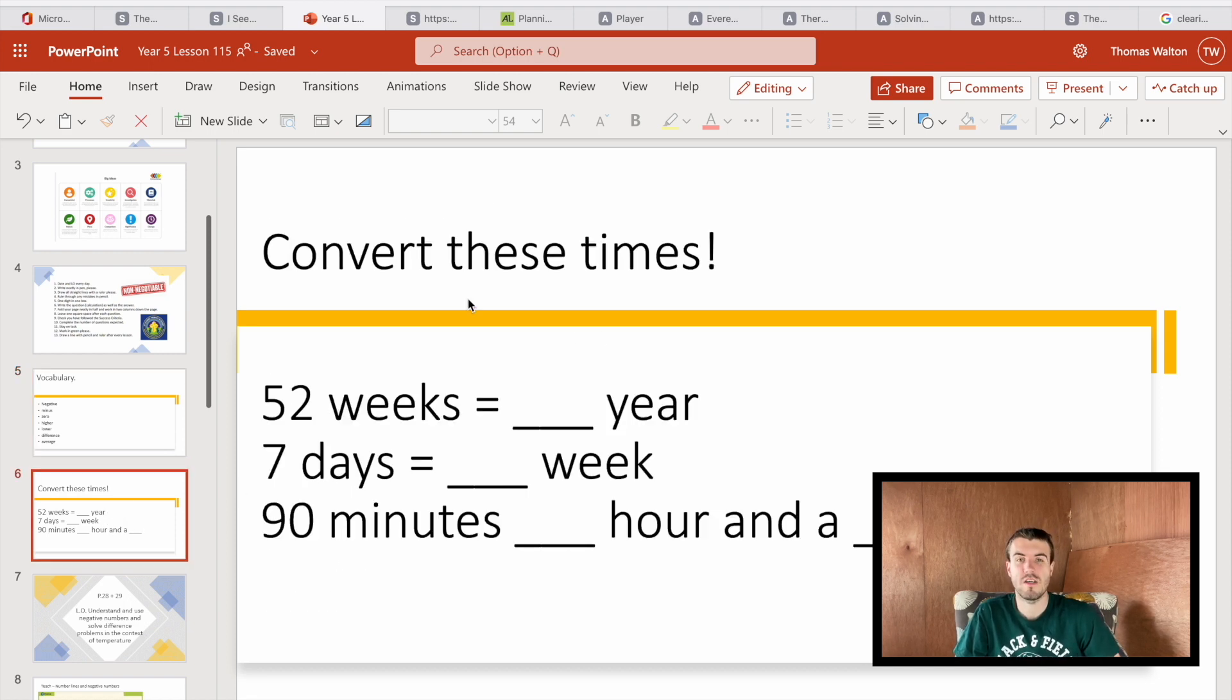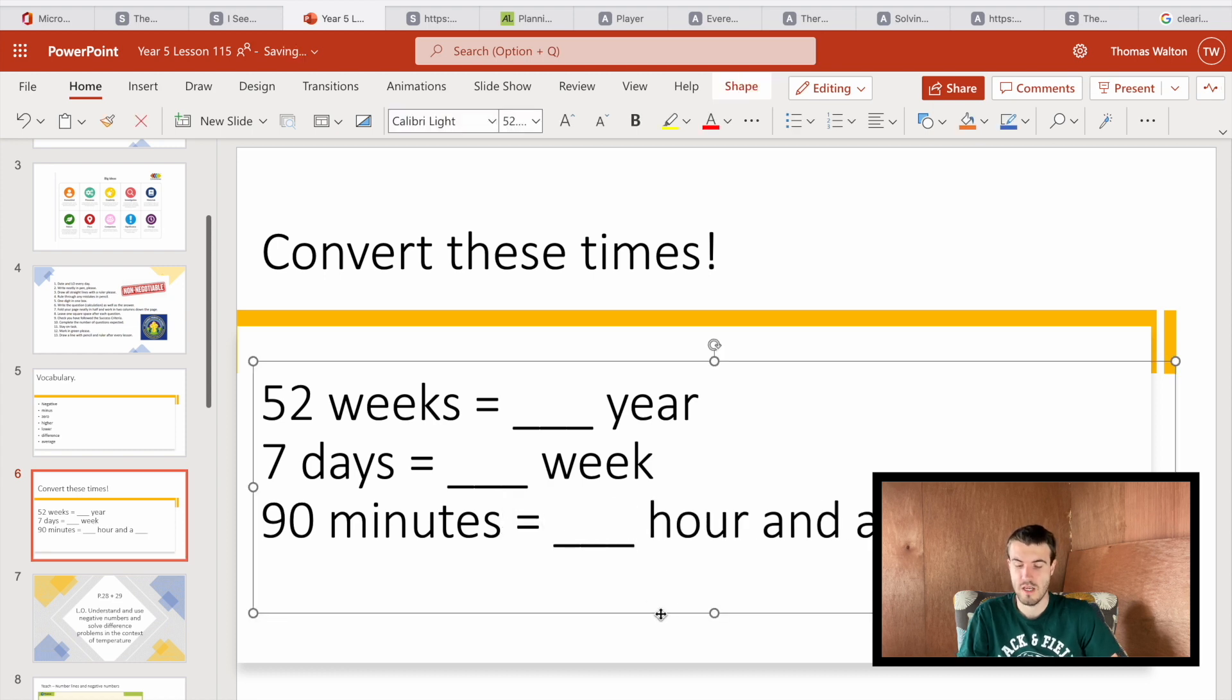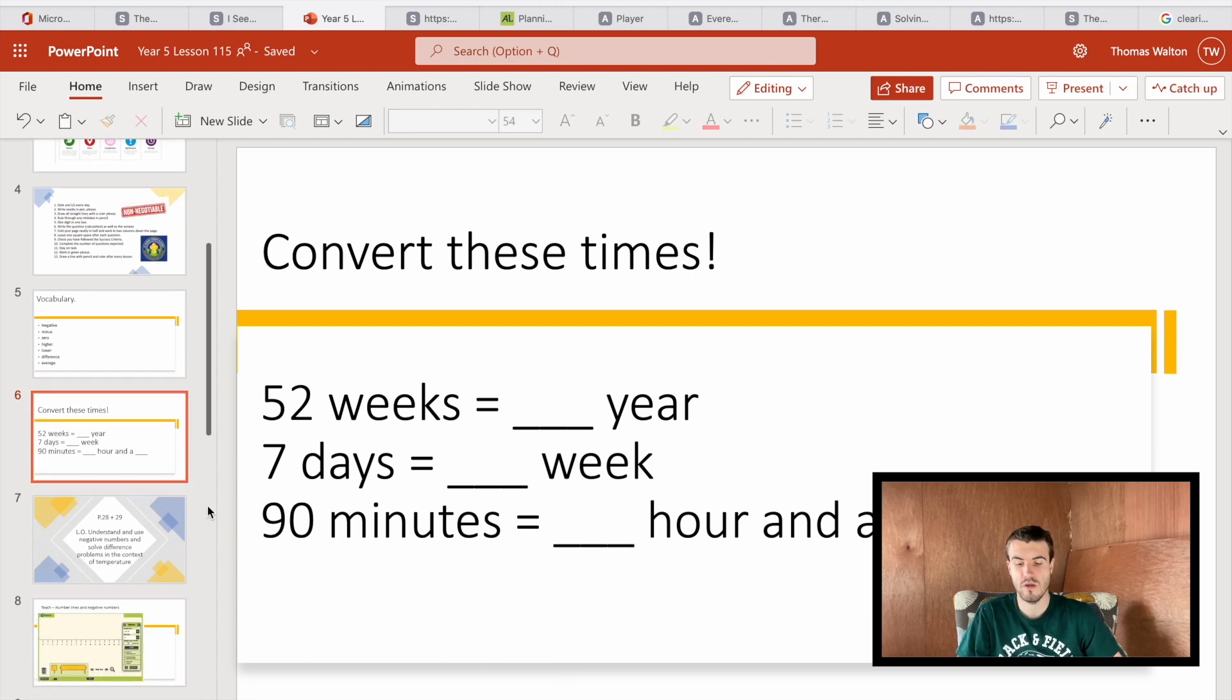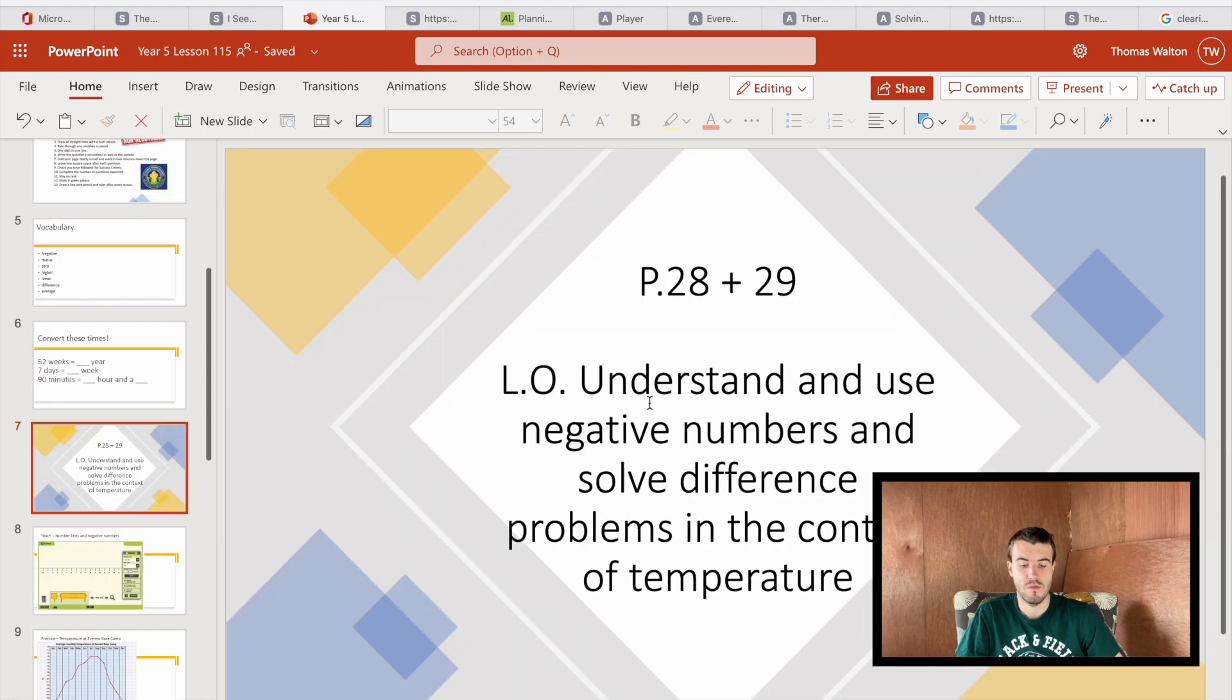Then we have a little starter. This is kind of like a revisit, revisit some work we've done previously. This doesn't link towards the lesson we're doing today, it's just a kind of reminder to refresh some number facts in children's brains. So we're just going to convert sometimes: how many weeks are in a year, how many days are in a week, how many minutes are in an hour and a half. So I'm just going to add an equal sign because I missed one there. You might think they're quite straightforward things for a year five class, but it's just a quick refresher. That'll be a two-minute activity: tell your partner what are the missing gaps, fill them in, and then we'll move on.